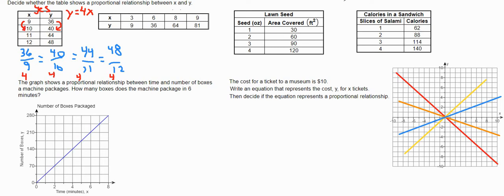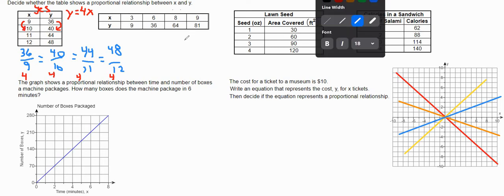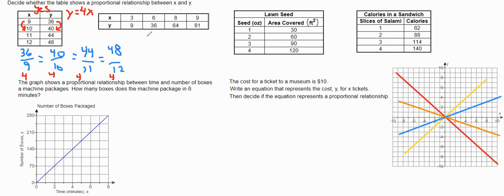For the next one, we're going to look at the table. Notice we'll start with 9 over 3, that equals 3. But then we have 36 over 6, which is 6. And those are not the same, so this is not proportional.